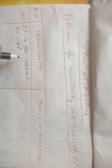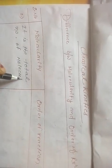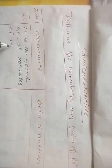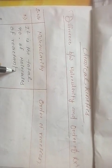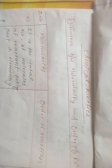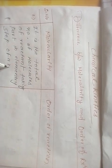I am going to discuss chemical kinetics: the difference between molecularity and order of reaction. Molecularity is the total number of molecules of reactant taking part in the elementary step of a reaction.